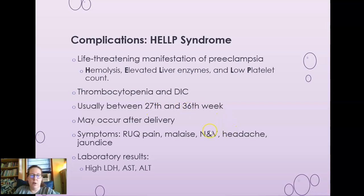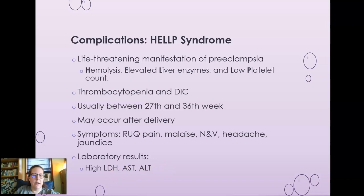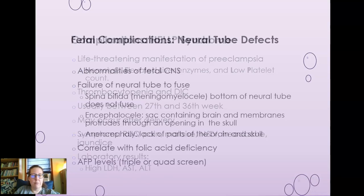HELLP syndrome symptoms include right upper quadrant pain, malaise, nausea, vomiting, headache, and jaundice. Lab results include low platelets, high LDH, high AST, and high ALT. You would also see hemolysis in the serum.